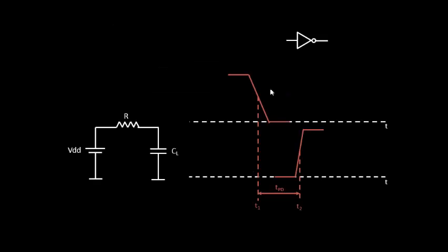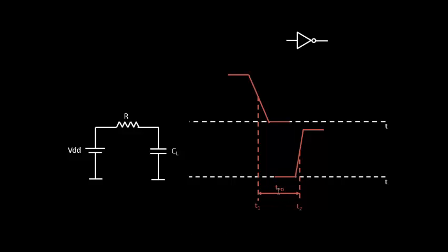If we apply this particular waveform at the input of the CMOS inverter, this is what you get at the output. We just realized that the output waveform is a function of resistance. The propagation delay is the delay difference between the 50% point of the input waveform and the 50% point of the output waveform. That is called propagation delay, and the output waveform is a function of resistance — the higher the resistance, the worse the output waveform and the greater the propagation delay.